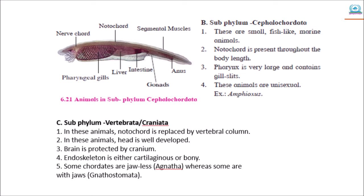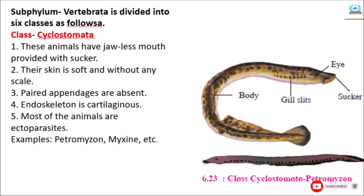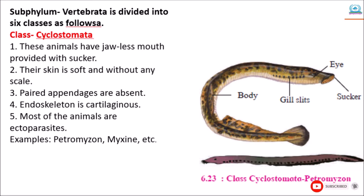This subphylum Vertebrata is again divided into six classes. The first class is Cyclostomata. 'Cyclo' means circular and 'stomata' means mouth. So their mouth is circular and has a sucker. These animals have a jawless mouth provided with a sucker. Their skin is soft and without any scales. Paired appendages are absent. Endoskeleton is cartilaginous, meaning they have soft bones. Most of the animals are ectoparasites. Examples: Petromyzon and Myxine, etc.